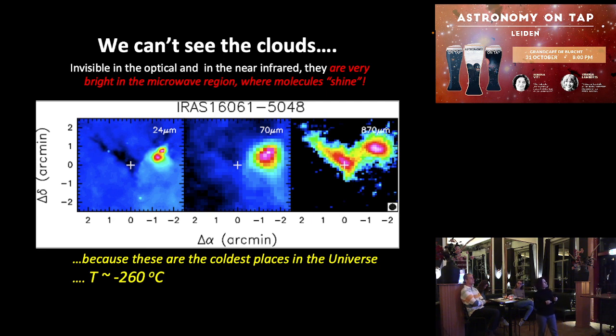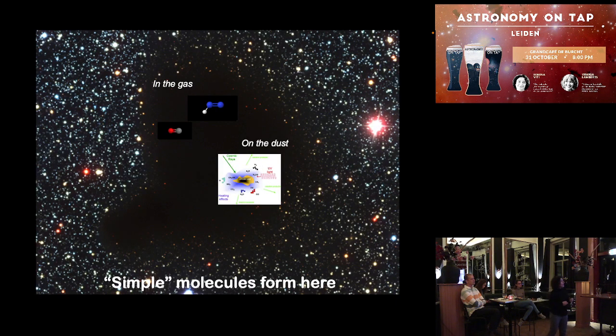And the reason why we can see molecules is because they are bright in the microwave region. So these three pictures here are showing you very near infrared, dark patch. Then far infrared, you can start seeing a bit. And then here, at this wavelength, the microwave wavelength, you see a lot of stuff. And this is because when the gas is very cold, as I said, around minus 260 centigrade, then you actually can only see the gas through the emission of molecules. And this is really why molecules are important.